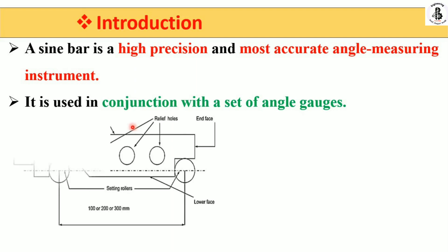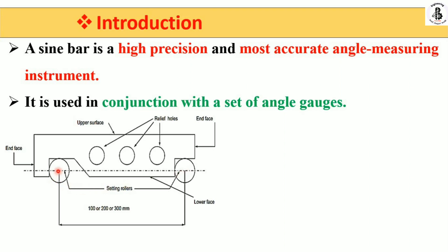This is the basic construction of a sine bar. The sine bar is available in different ranges — around 100 mm, 200 mm, and 300 mm. This length is the center-to-center distance between the two setting rollers. It has two end faces and an upper surface that are accurately and precisely manufactured. For holding components and reducing weight, relief holes are provided, with different manufacturers using different kinds of holes.